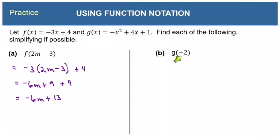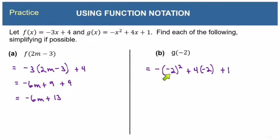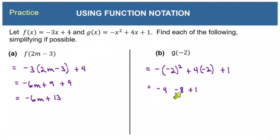Now let's evaluate g of negative 2. We take our g function and plug negative 2 into it, giving us negative (negative 2) squared plus 4 times negative 2 plus 1. Be very careful: we square the negative 2 first, giving 4, and then apply the negative in front, giving negative 4. Then 4 times negative 2 is minus 8, plus 1. So negative 4 minus 8 is negative 12, and negative 12 plus 1 is negative 11.